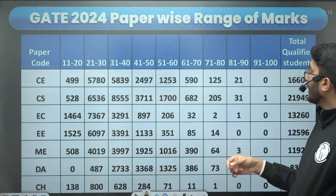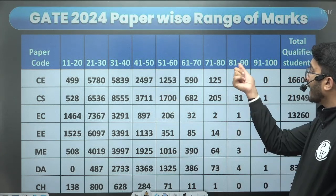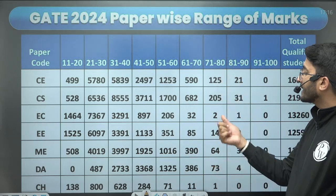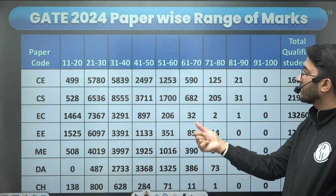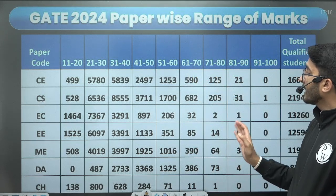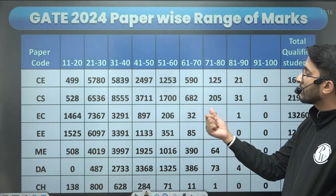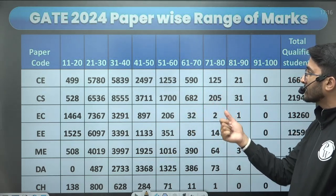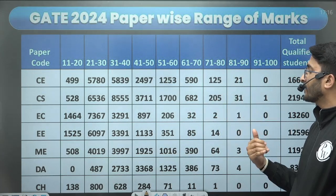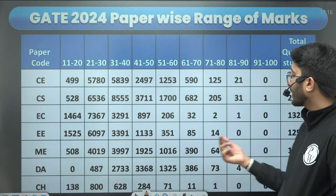For EC, in 91 to 100, zero students are there; 81 to 90, one student; 71 to 80, two students; and 61 to 70, 32 students are there. It means if you are getting marks above 60, then definitely your rank is under 50 or under 35.